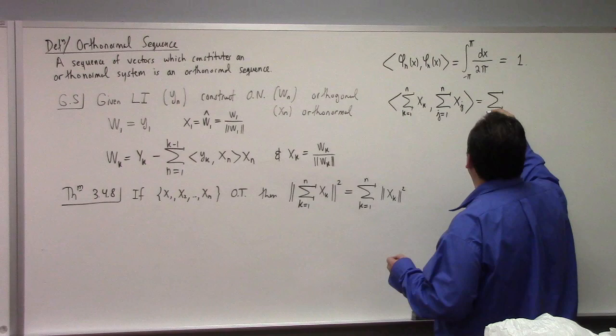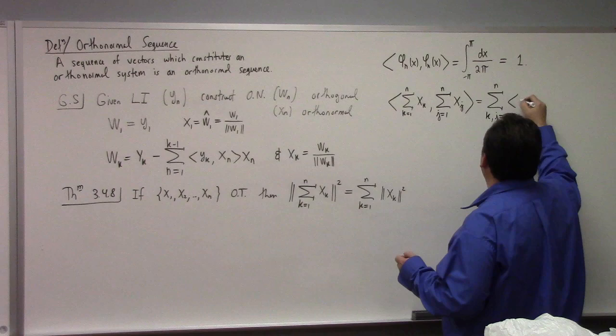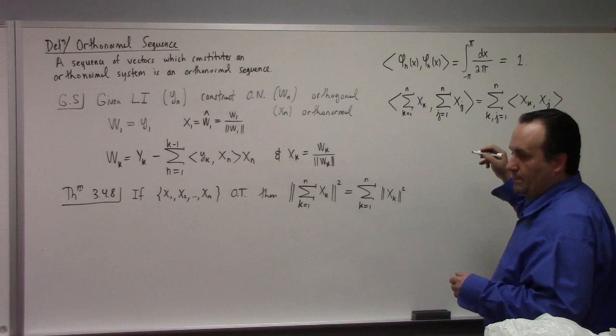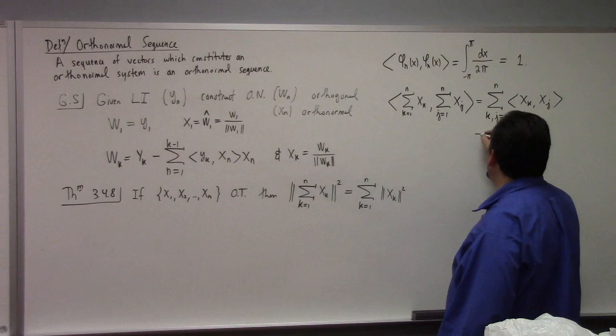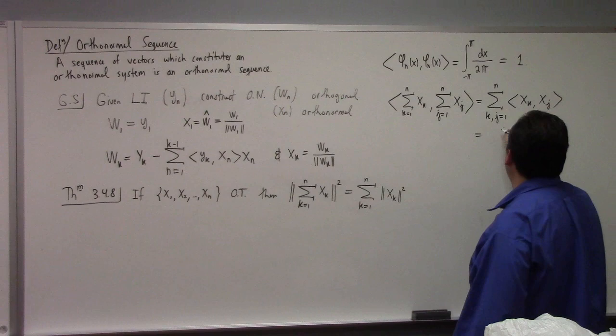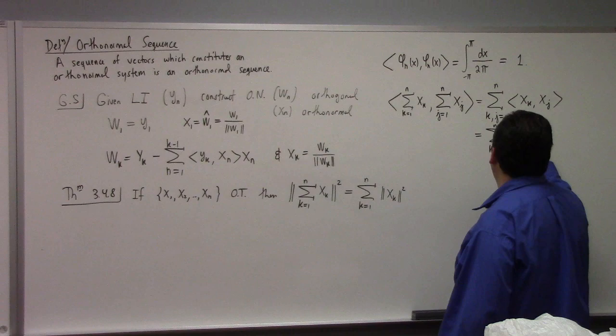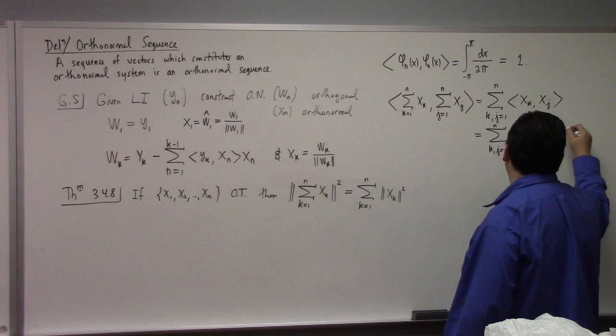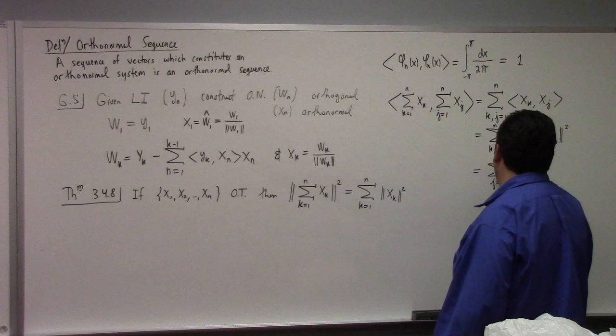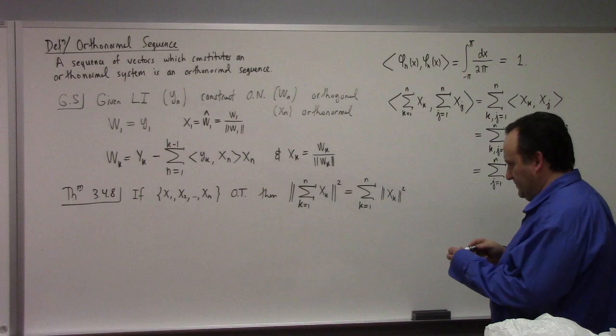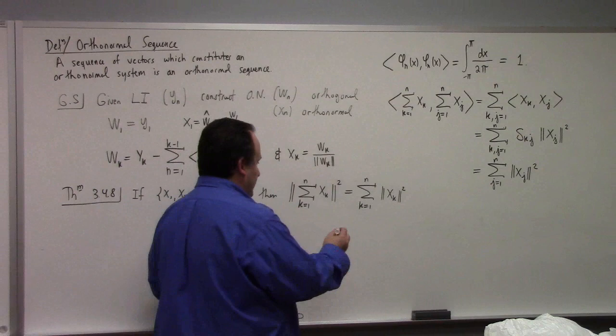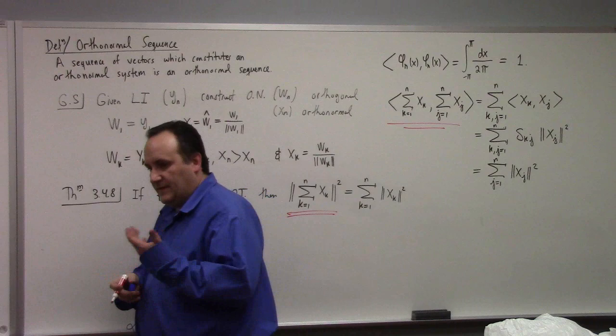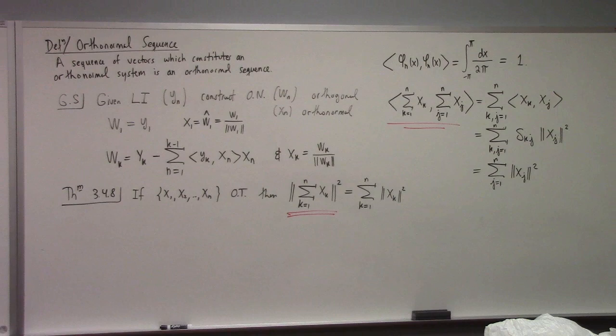So then by the properties of the inner product, we can pull out the sum over K and J from 1 to N. And we have the inner product of X_K and X_J, right? So that's literally the sum. This is the sum over K and J of the Kronecker delta K_J, with the length of X, we'll keep the J squared. So that simplifies to just sum J equals 1 to N of the length of X_J squared. But what I just calculated, right, is literally this right here anyway, right? So the length of the sum of the Xs is the inner product of the sum with the inner product of the sum, so.